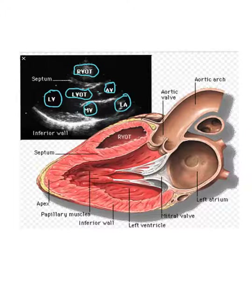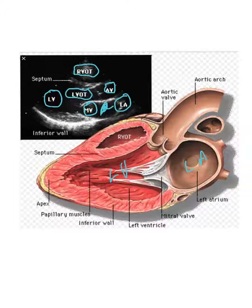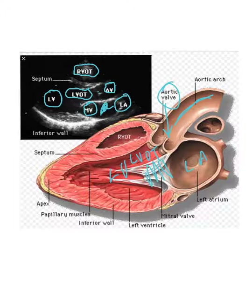Now, the left atrium is actually this chamber here. You can see the left atrium, the LV, left ventricle, the mitral valve, the LV outflow tract, the aortic valve, and the aorta itself. Now, most of the time in a long axis view, we only see about this much of the screen. We see the aortic valve and a little bit of the ascending aorta, but we won't see the whole thing.